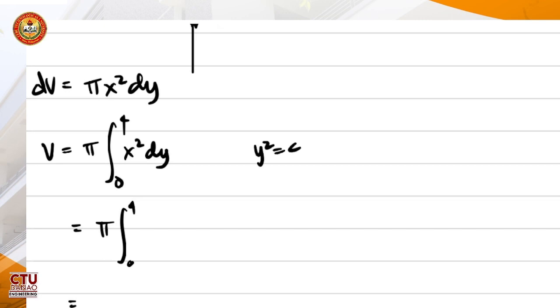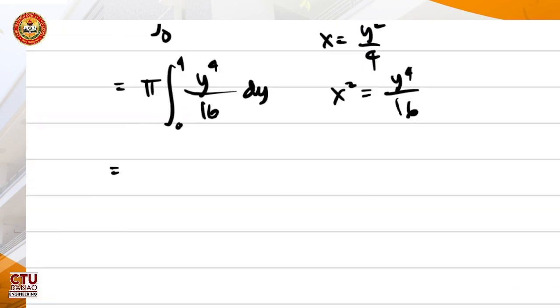Based on the curve, we know that y squared is equal to 4x. So therefore, x is y squared over 4. So x squared is y raised to 4 over 16.